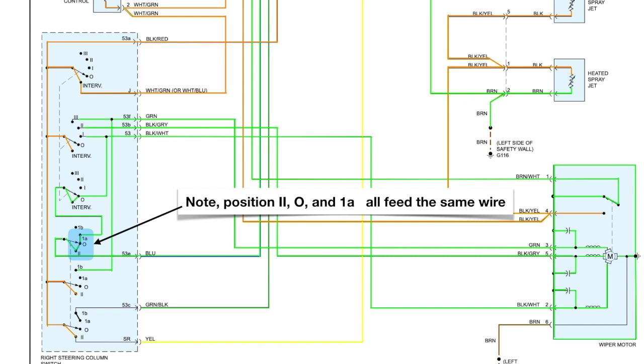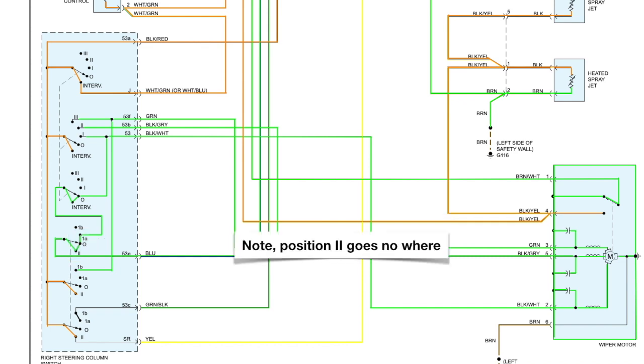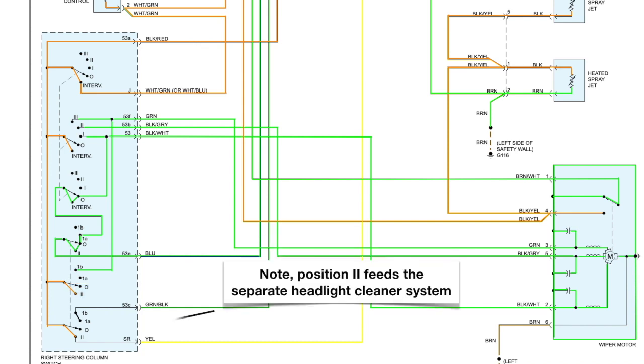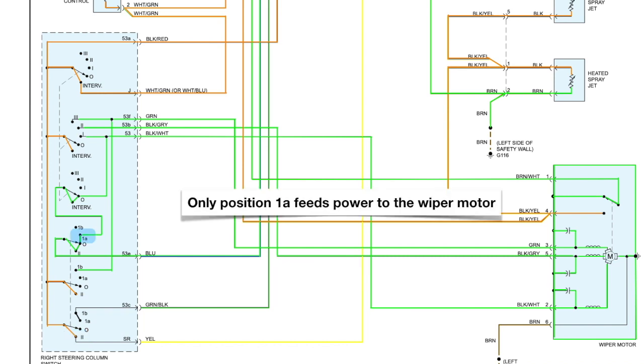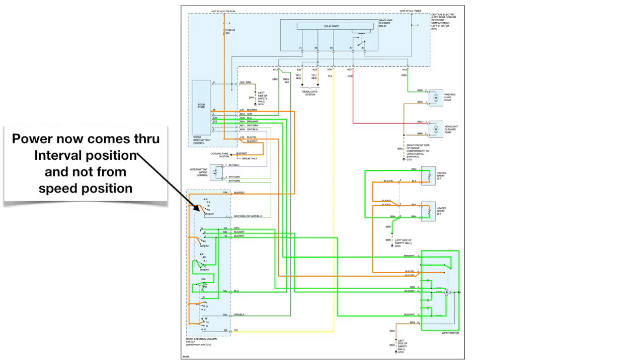Note that position 2 here goes nowhere, there's no wire attached to 2. Position 2 down here feeds the separate headlight cleaner system. Only position 1A feeds power to the wiper motor.